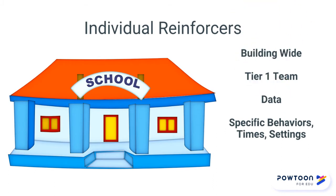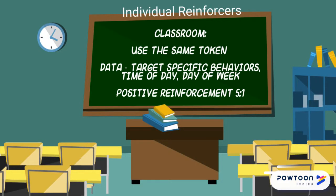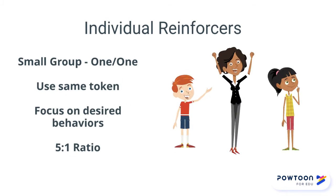Building-wide, your Tier 1 team will use data to focus on specific behaviors, times, and settings. In your classroom, individual reinforcers should be the same token used building-wide. You can use data to target specific behaviors, times of day, and days of the week. Remember, use positive reinforcement five times for every one correction. In small group or one-on-one settings, use the same reinforcer token, focus on desired behaviors, and remember the 5-to-1 ratio.